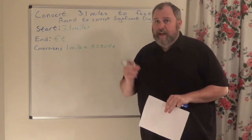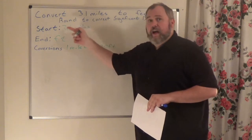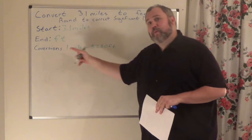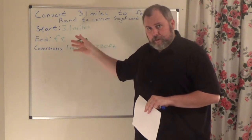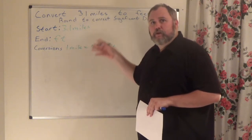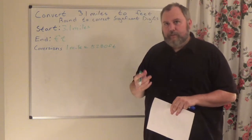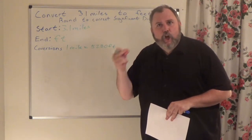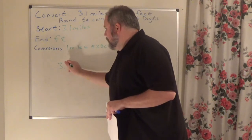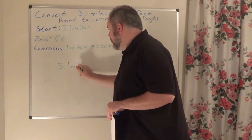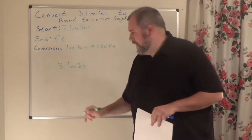After you get your game plan, you know where you're starting, you know where you're going, you know how you're going to get there — start to do it. Ask yourself: where am I starting from? I am starting at 3.1 miles. Right now, put a one under it just like this — we need to make this into a fraction, and the easiest way is by putting a one under the denominator.